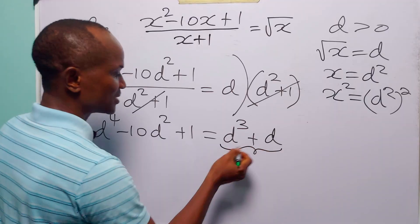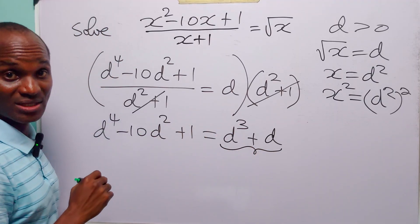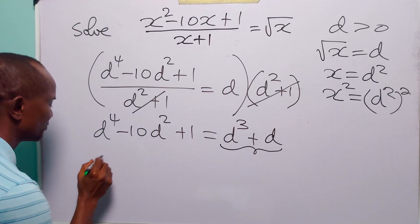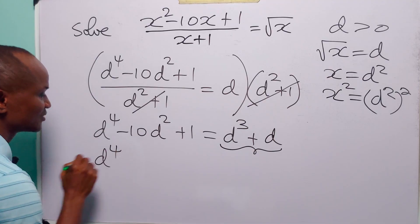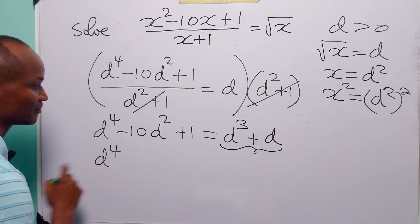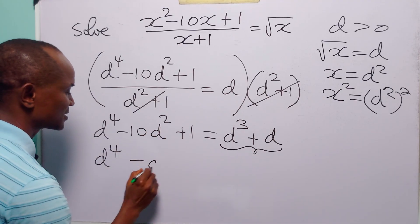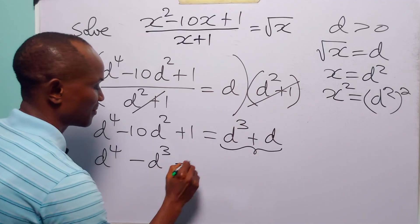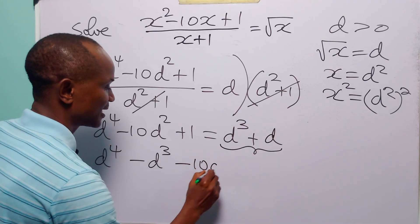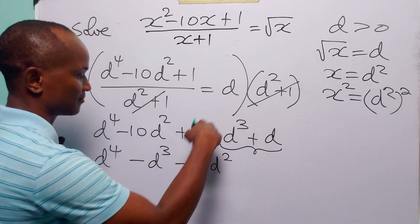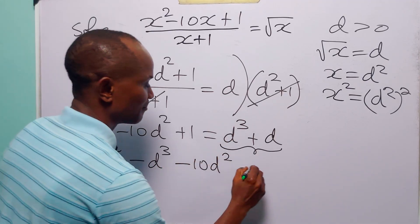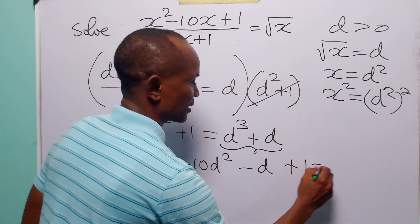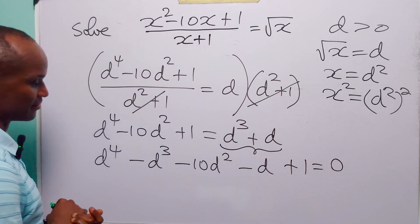Now, let us move these two terms over to the left-hand side. When we do that, this equation becomes d to the power 4 minus d cubed minus 10d squared minus d plus 1 is equal to 0.